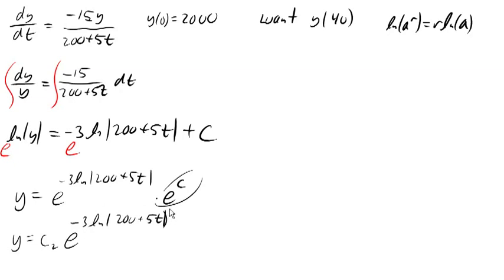So we're gonna write this as c2 e to the ln of (200 plus 5t) to the negative 3. Right? So we're gonna pop that negative 3 up onto the a, so we're gonna pop that negative 3 up as the exponent there. Now the e and the ln can undo each other, and we'll be left with (200 plus 5t) to the negative 3.